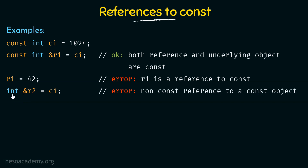Next, here I am declaring a normal reference r2 of the type integer — a non-const reference — and I am trying to bind it to ci. This is going to throw an error because r2 is a non-const reference but ci is a constant type object. We are not able to bind a constant object to a non-const reference. Non-const references cannot be bound to constant objects, but the vice versa is possible, which we will see when we move ahead.